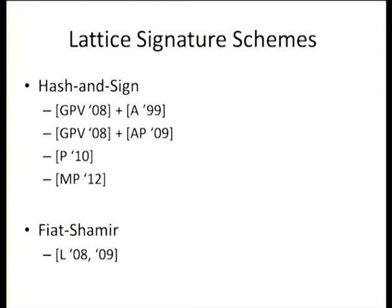Encryption schemes are another really important public key primitive, and I think we already have it from lattices. NTRU, from about 15 years ago, is really quite good and now we have some foundations for its hardness. But signatures — I still think there's a lot of work to be done because we can't quite get them to be short enough and competitive. This work gets us quite close to what we need.